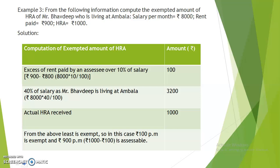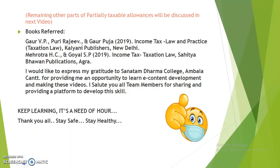How does Rs. 900 assessable come? We take the difference between actual HRA received and the excess of rent paid over 10% of salary — that is Rs. 900 is assessable. The remaining other parts of partially taxable allowances will be discussed in the next video. Thank you so much. I would like to express my gratitude to Sanatana Dharam College, Ambala Cantt for providing me an opportunity to learn e-content development and making these videos. I salute all team members for sharing and providing a platform to develop this skill.